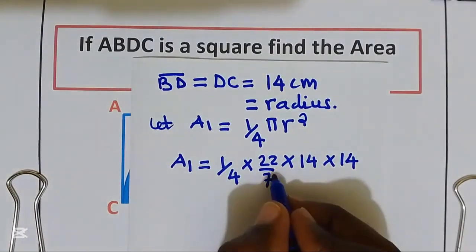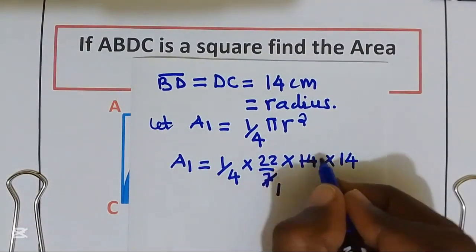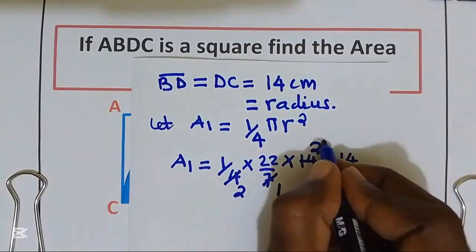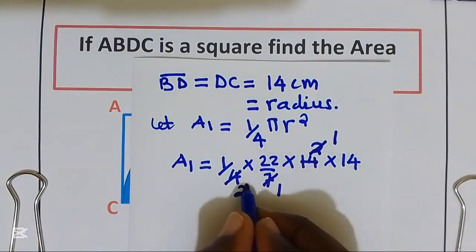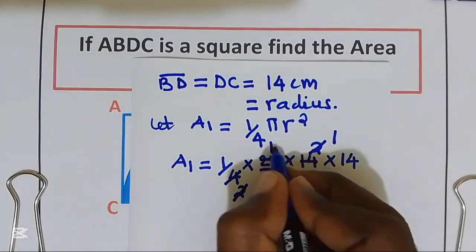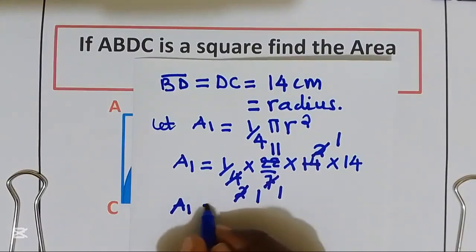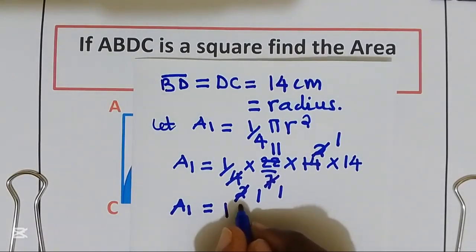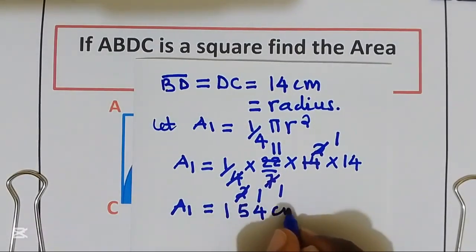Let us simplify, by 7, by 7, by 7, by 2, by 2, by 2, it is 1, by 2, 1, by 2, we get 11. Area 1 is equal to 11 multiplied by 14, we are going to get 154 cm squared.